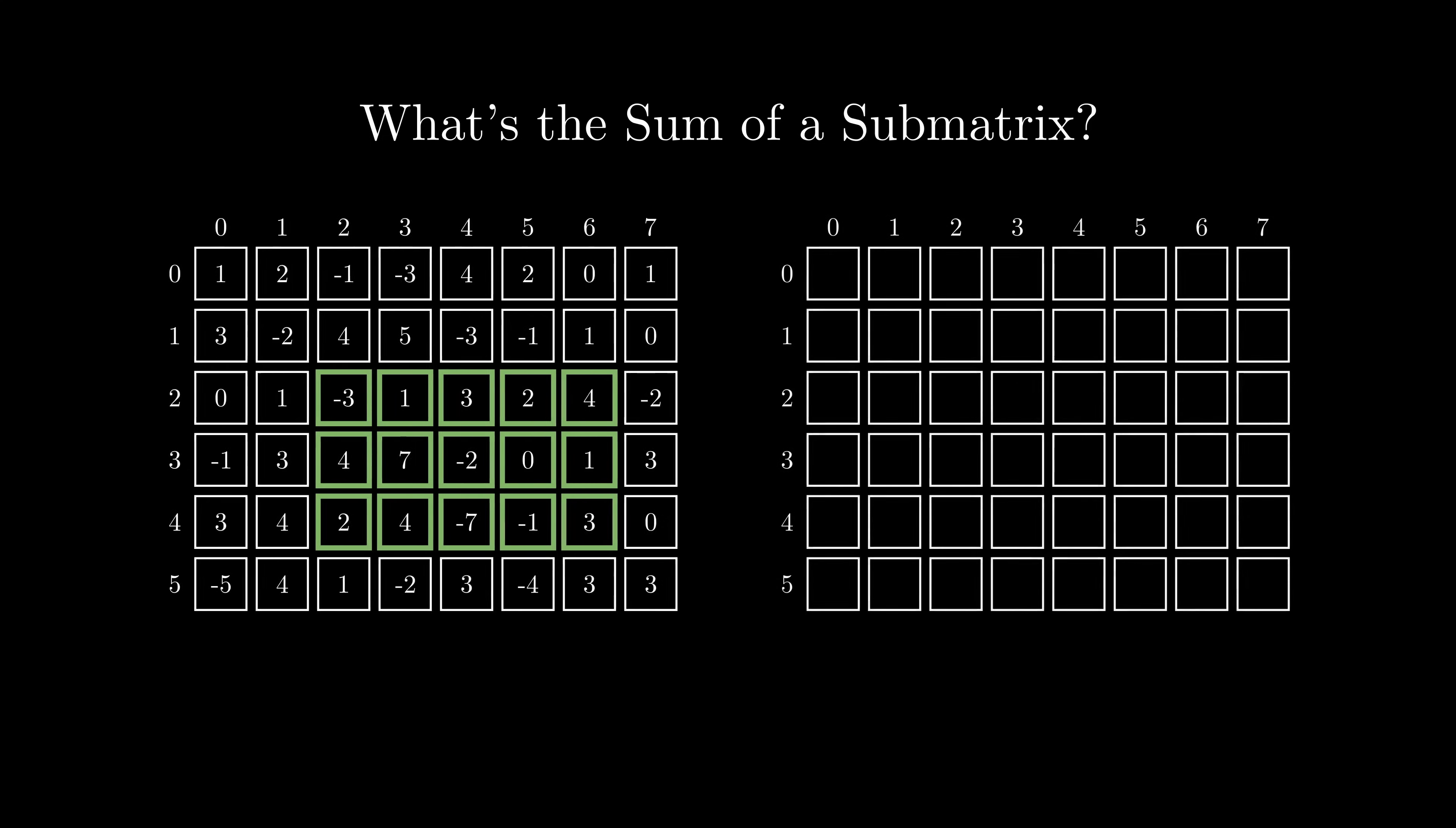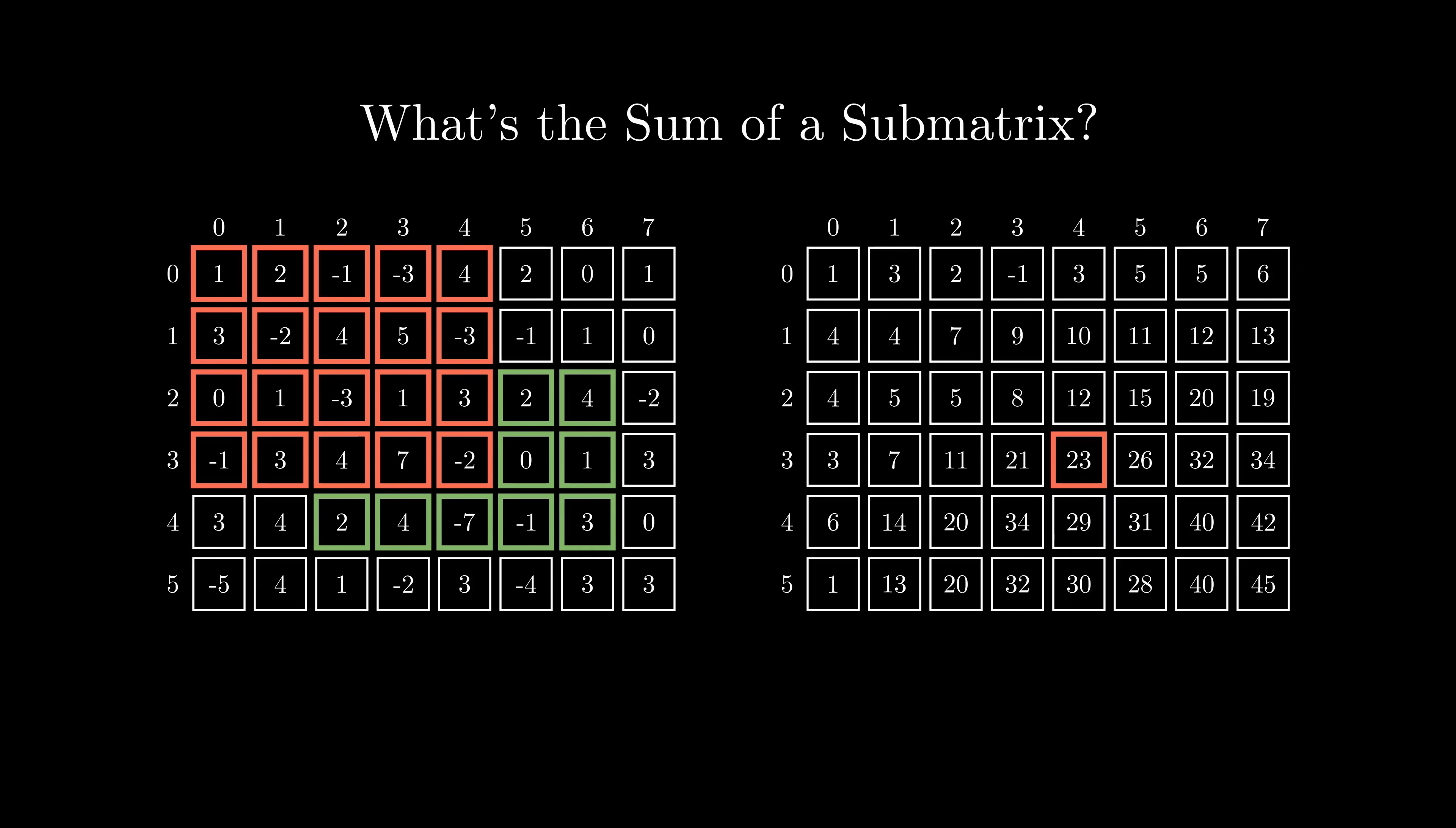The goal is to answer each query in O(1) time. We can achieve that by calculating a two-dimensional prefix sum array. In a two-dimensional prefix sum, each element represents the sum of all the numbers above and to the left of it in the initial array. So if we manage to calculate the 2D prefix sum, we can answer any submatrix sum query very quickly.